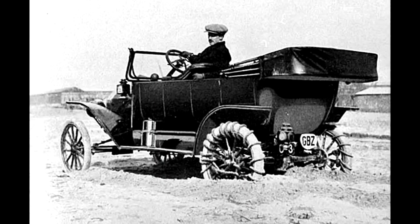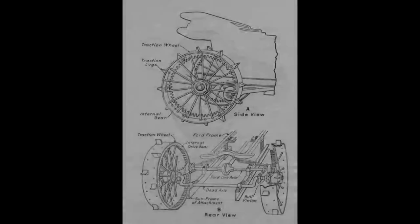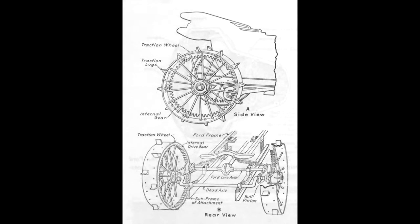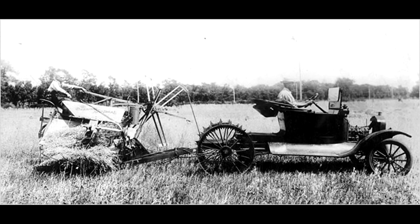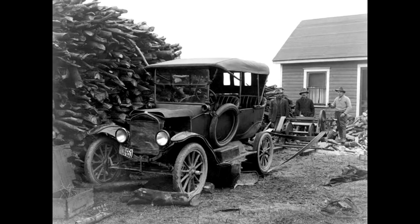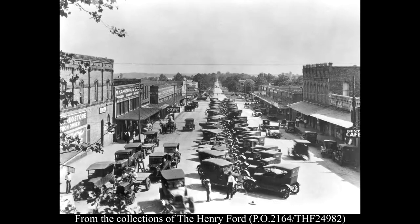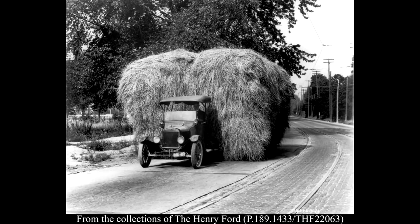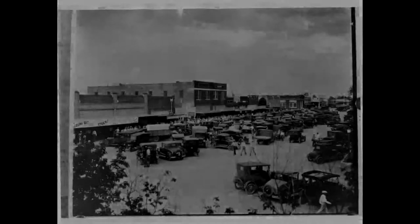Other accessories were designed to enhance the utility of the Model T. These included kits to make it a four-wheel drive vehicle. Some manufacturers offered kits to convert the car into a tractor by replacing the rear wheels with large steel wheels. Some companies built machinery that could be powered by a belt driven by the rear axle, including wheat threshers and portable sawmills. The rugged simplicity of the Model T, coupled with numerous agricultural accessories, resulted in a vehicle equally at home in town or on the family farm or ranch.